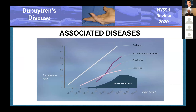Associated diseases include epilepsy, alcoholism, diabetes, AIDS, etc. There's not a cause-and-effect relationship in these situations. It's simply that if you look at a population of alcoholics, the incidence of Dupuytren's is higher than in the normal population. We don't know why these relationships exist.